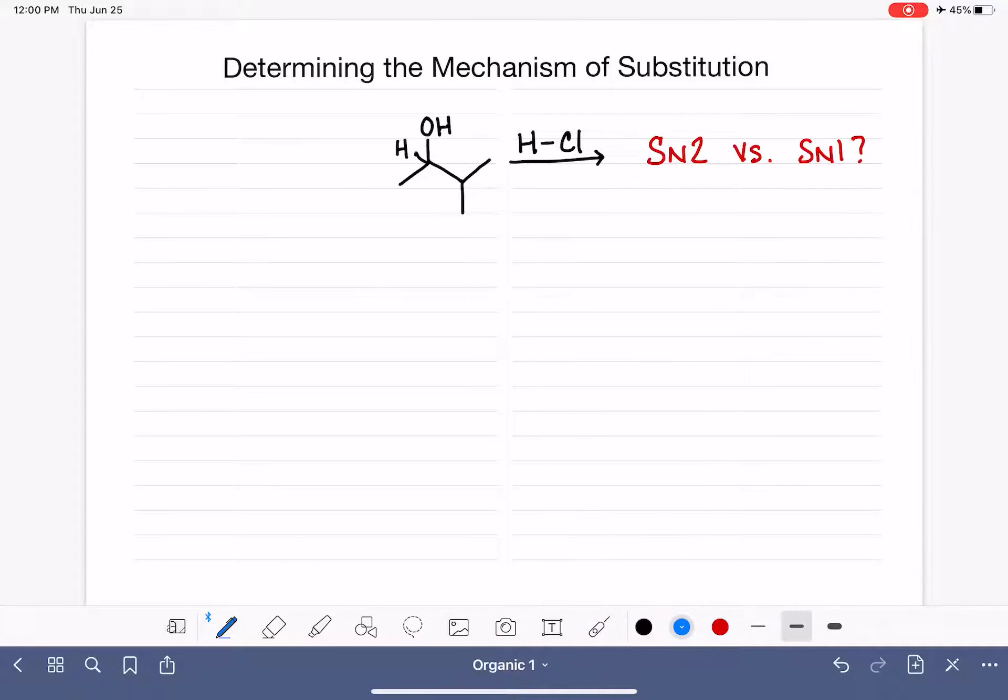Why is this important for you to be able to do? The short answer is that the products of these reactions differ based on which mechanism it's taking. There are two ways in which the products of the substitution reaction are different, SN2 versus SN1.